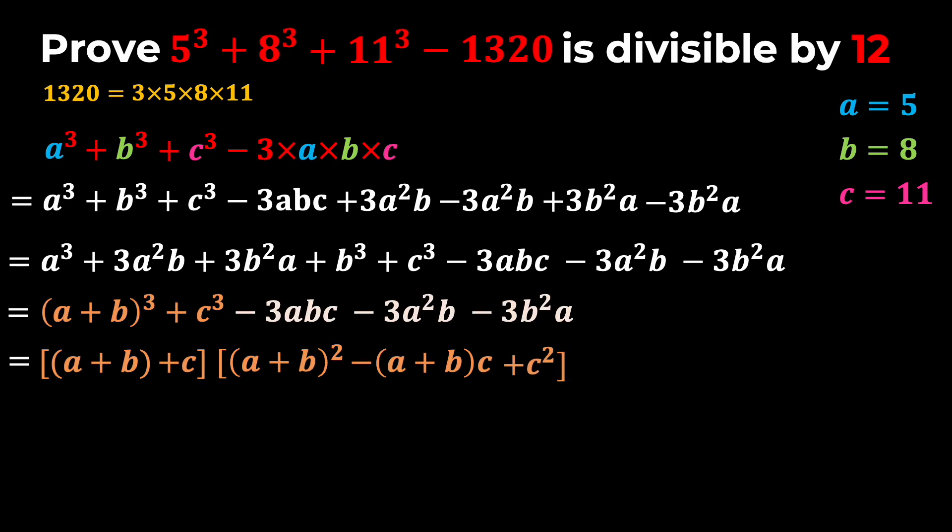And notice that these three terms have a common factor of negative 3AB, so I can pull that out and I will have negative 3AB times A plus B plus C. And that's great because we have a common factor of A plus B plus C.